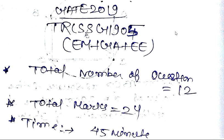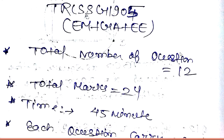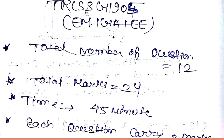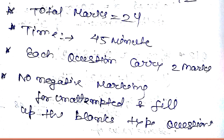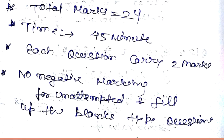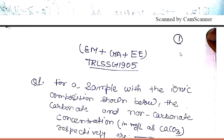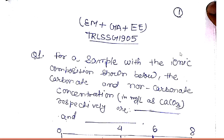Welcome to TLSS video lectures. In this video lecture we will discuss the questions of the fifth test series for civil engineering students related to the GATE examination. This test series contains 12 questions with a total of 24 marks, time allotted is 45 minutes, each question carries 2 marks, with no negative marking for unattempted and fill-in-the-blank type questions. The test series contains questions from engineering mathematics, general aptitude, and environmental engineering.